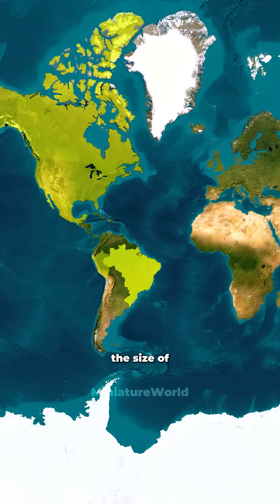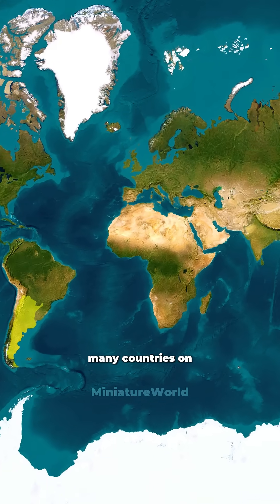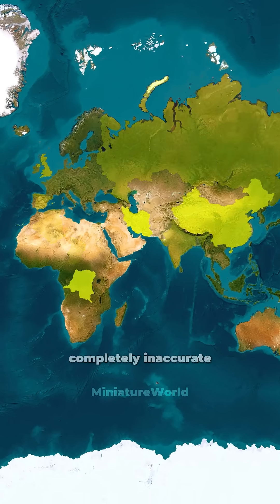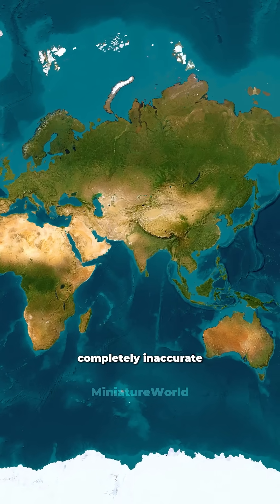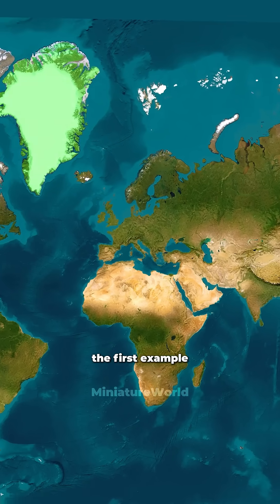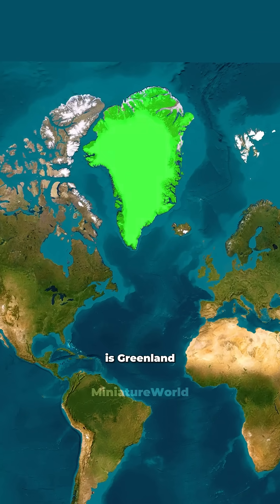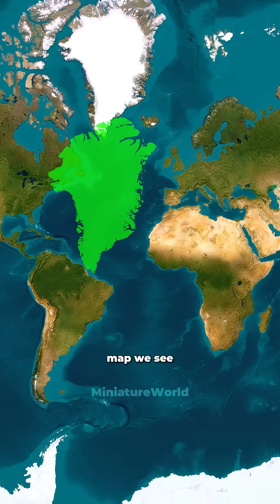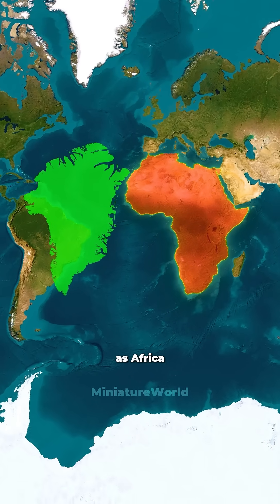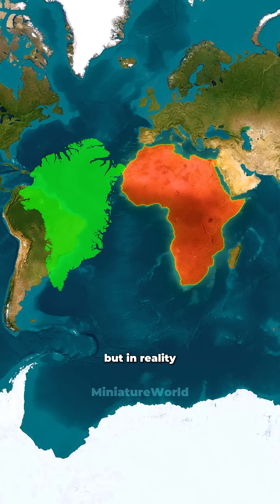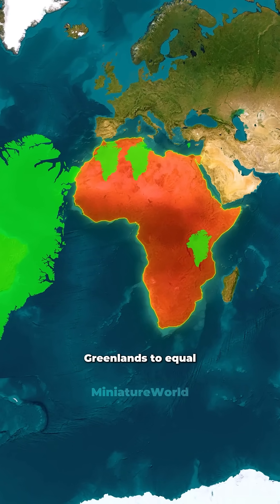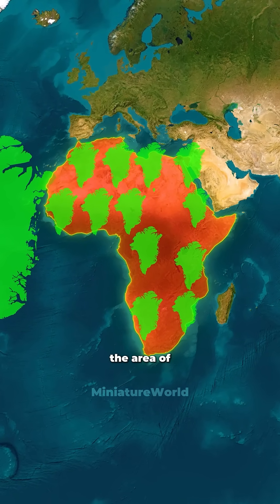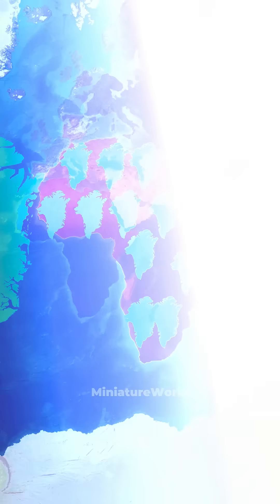However, the size of many countries on this map is completely inaccurate. The first example is Greenland. Looking at the map, we see Greenland as big as Africa, but in reality it takes 14 Greenlands to equal the area of Africa.